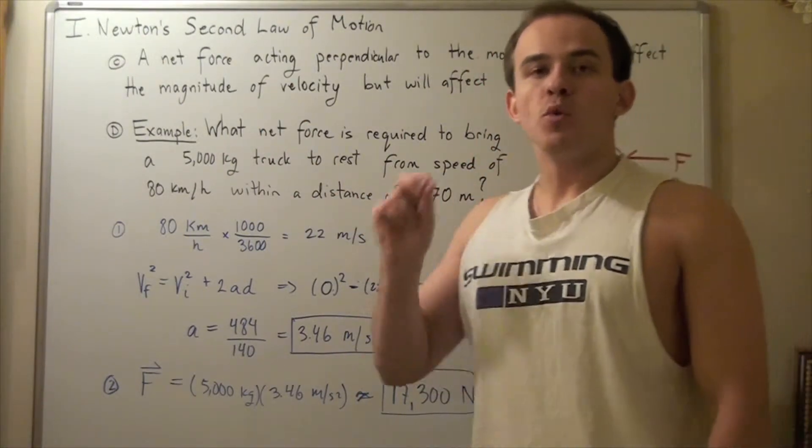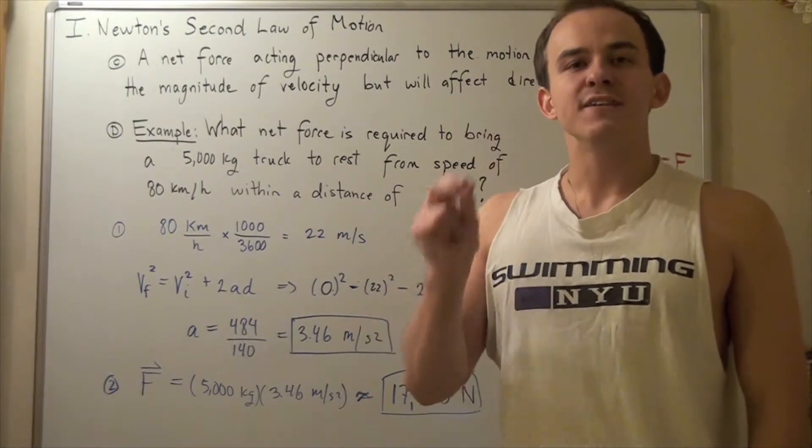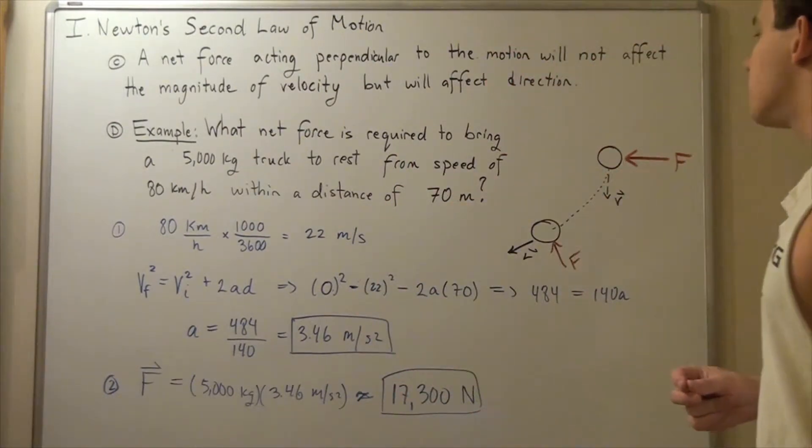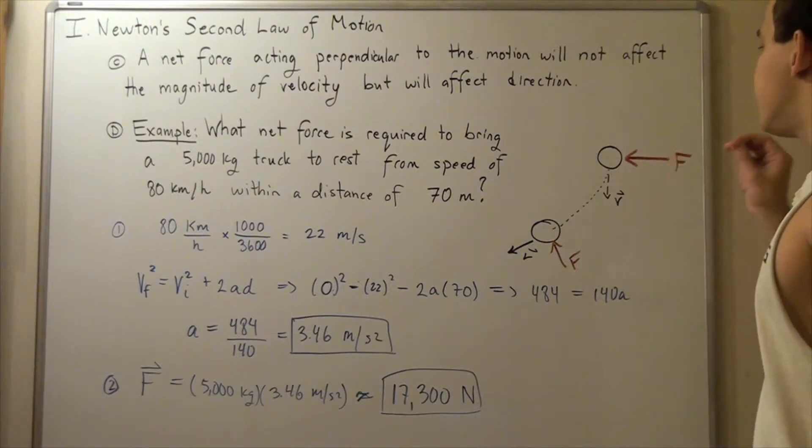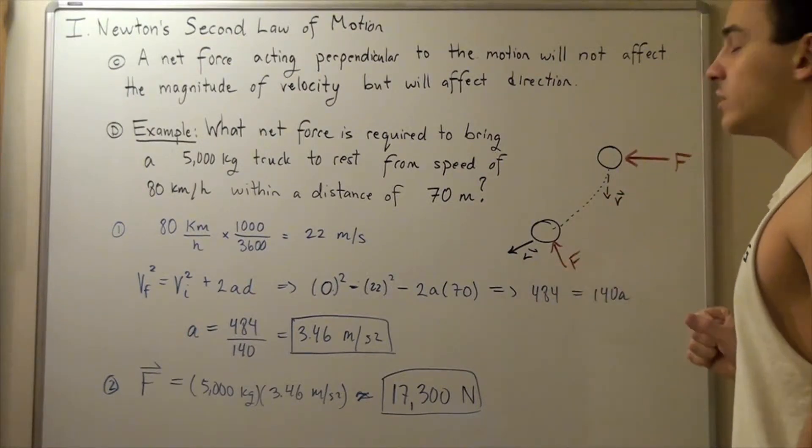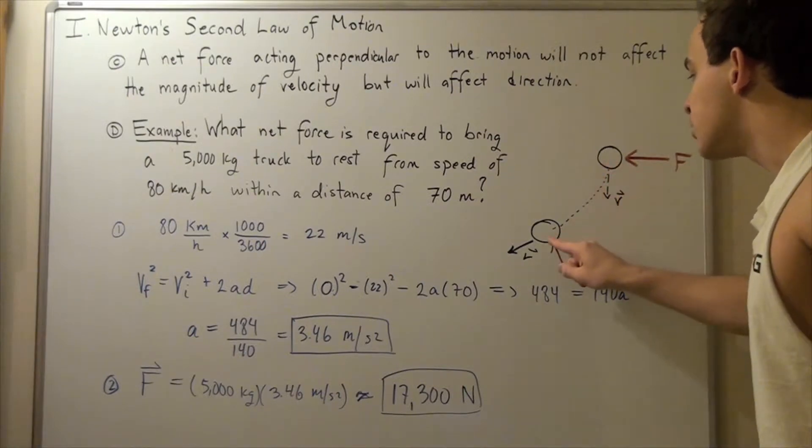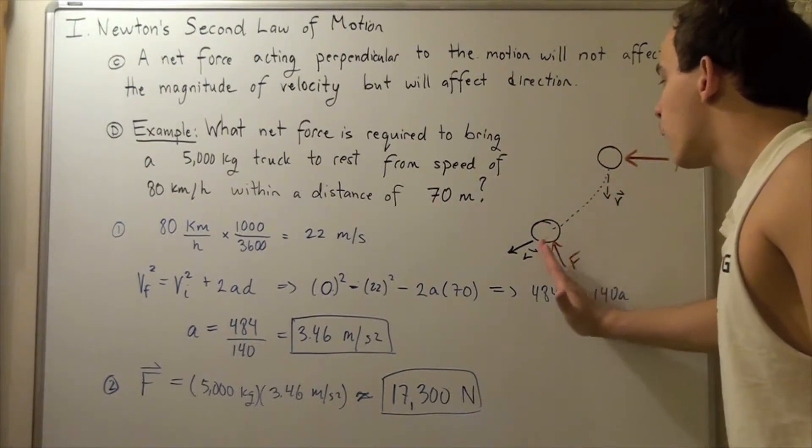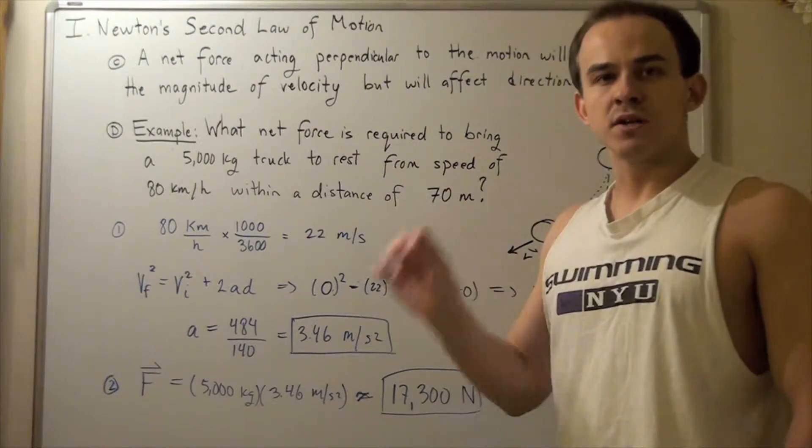So, there's one more important thing I want to point out about net forces before we do a problem using forces. Whenever a net force acts at a 90 degree angle to the motion or velocity of our object, this will not affect the magnitude of our velocity, but it will affect our direction of velocity. Suppose we have a ball free falling with some terminal velocity, v. And suppose I apply a force that's at a 90 degree angle to our velocity vector. And I keep applying it as my ball changes our direction. Notice that our magnitude of velocity will not change, but what will change is our direction. And if I keep applying this force at a 90 degree angle, my ball will eventually make a circle. And we'll talk more about this when we talk about centripetal acceleration.